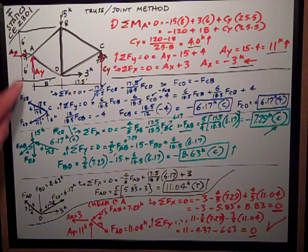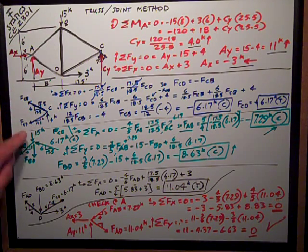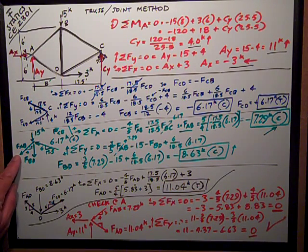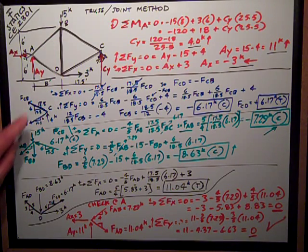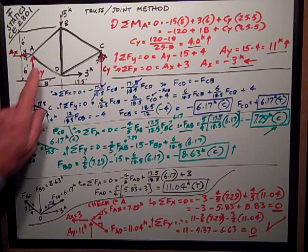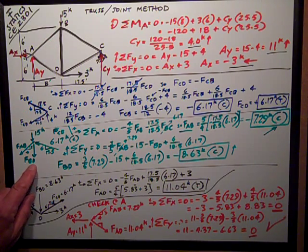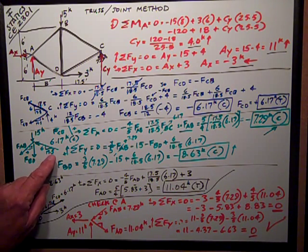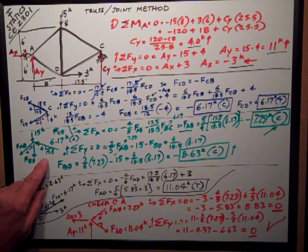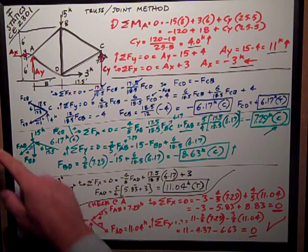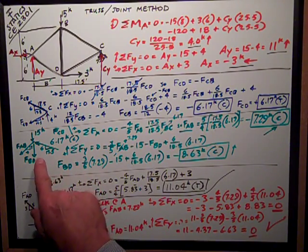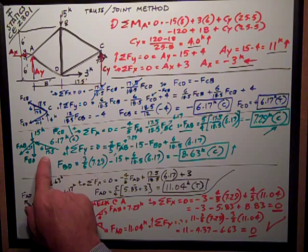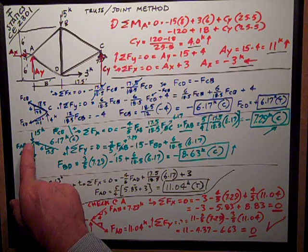I move on to joint B up here at the top. I have my 15 kips applied force. I have my unknown FAB here to the left, assumed in tension. The geometry over here is a 3-4-5 or a 6-8-10 triangle, so I've shown that here. I have my vertical member BD, assumed in tension down. And here is my known force from member BC or CB. Remember, it's compression, so it's pushing on the joint instead of pulling away from it in tension. So I've drawn it with that correct sign on the arrow showing its geometry. This is a good free body diagram at B.